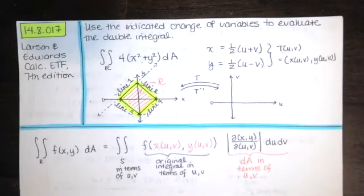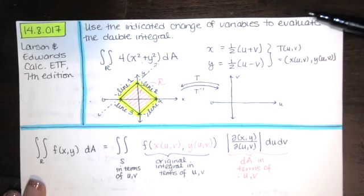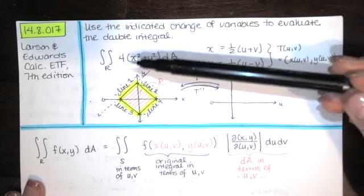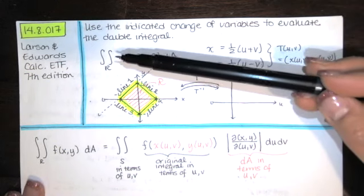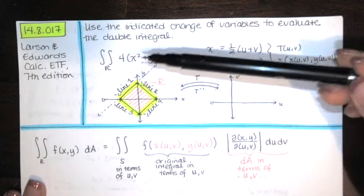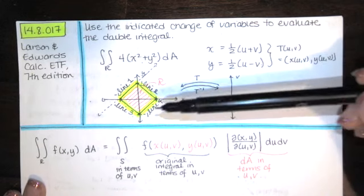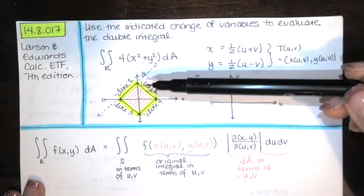In this video, we solve problem 14.8.017 from the Larson and Edwards Calculus Early Transcendental Functions text, 7th edition. We're asked to use the indicated change of variables to evaluate the double integral. We have the double integral over R of 4 times the quantity x squared plus y squared, where this is our region R.